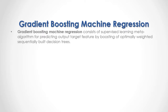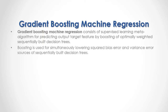Gradient boosting machine regression consists of a supervised learning meta-algorithm for predicting an output target feature by boosting of optimally weighted, sequentially built decision trees. Boosting is used for simultaneously lowering square bias error and variance error sources of sequentially built decision trees.